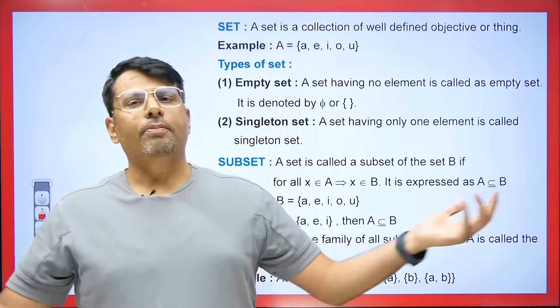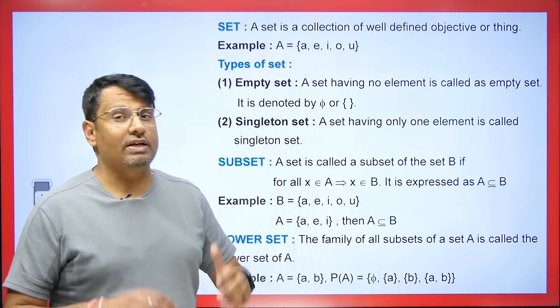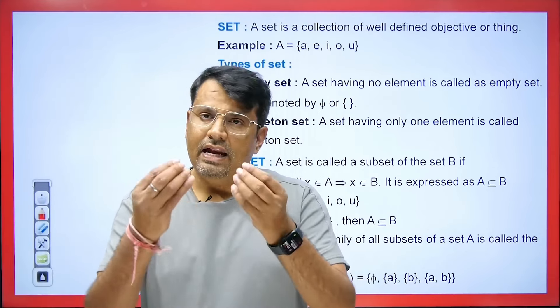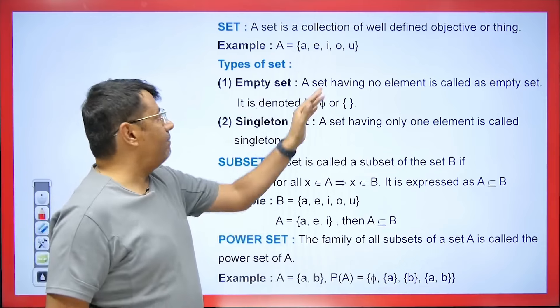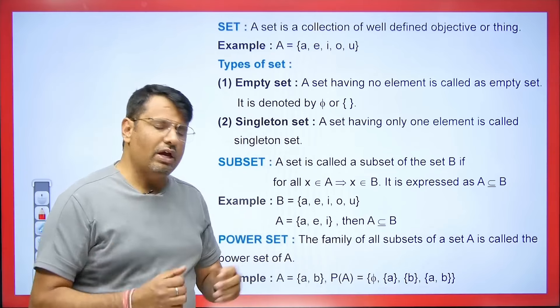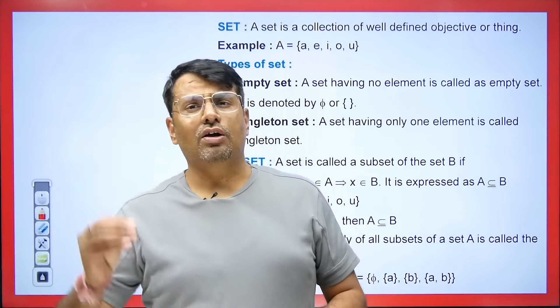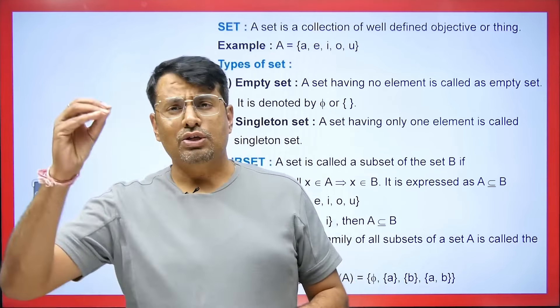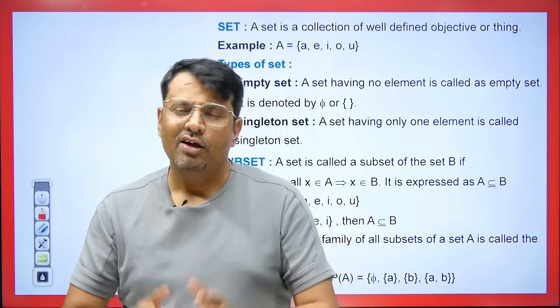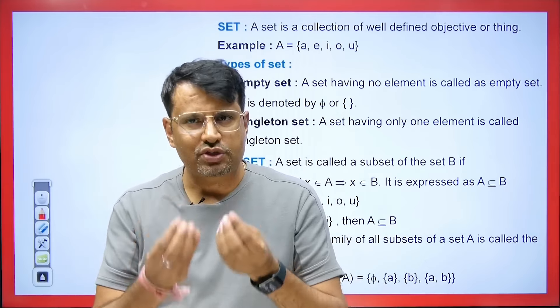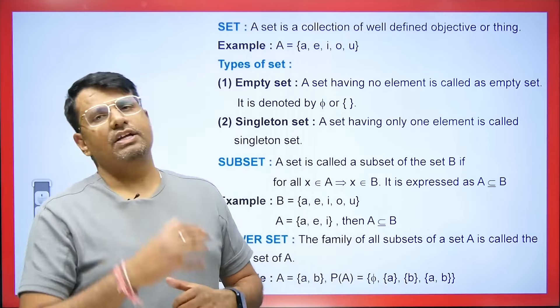Now we will discuss the types of sets. First, the empty set. A set having no elements is called an empty set — there is no element present in it. For example, if I ask you which even number between 10 and 100 is also a prime number, there is no such even number between 10 and 100 that is also prime — so the set formed will be an empty set. Empty set means there is nothing there.